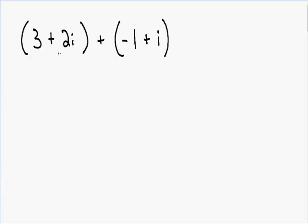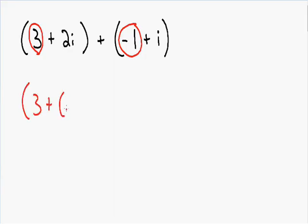Here we have 3 plus 2i being added with negative 1 plus i. Adding and subtracting complex numbers is exactly the same as any other expression — you only add and subtract like terms. So what are the like terms? We have the real numbers, which are like terms. We have the number 3 and the number negative 1, so we can add those together: 3 plus negative 1.